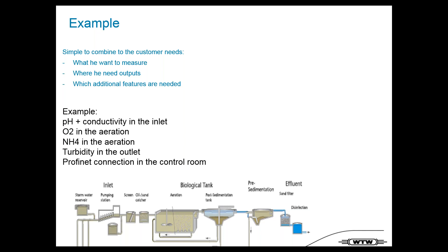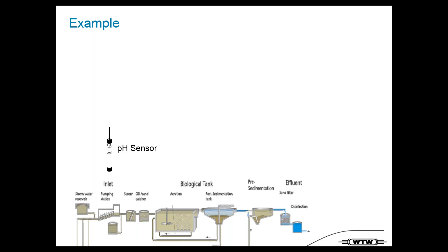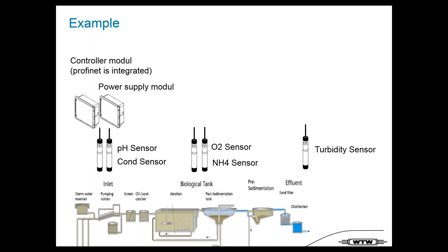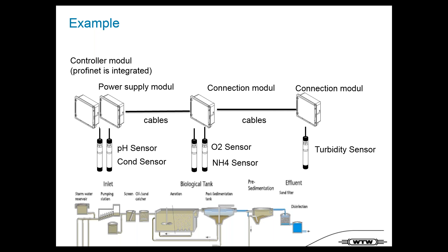It's simple to realize — you select the sensors: pH and conductivity for the inlet, DO and ammonium for the aeration, turbidity for the outlet. Then you need a power supply, a controller module because PROFINET is integrated, modules to connect the system, cables in between, and finally a terminal. That's it.